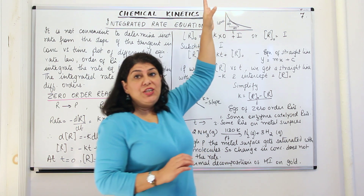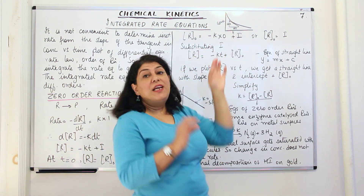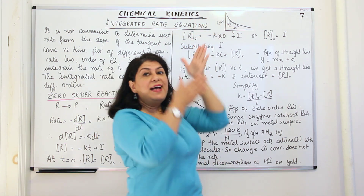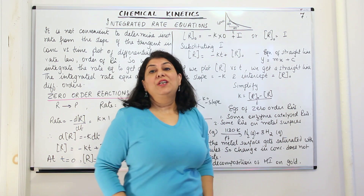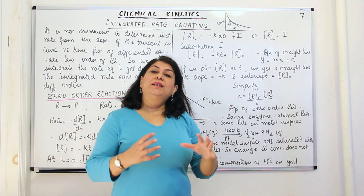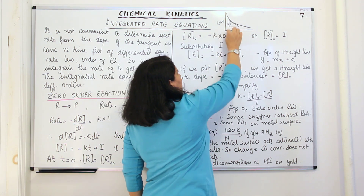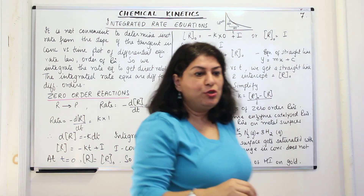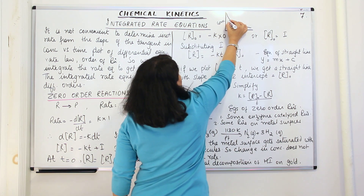For a reactant, the x-axis is time and the y-axis is concentration. Initially when time is zero, the concentration of the reactants is the highest, and as time passes and the reaction takes place, the concentration of the reactant keeps on decreasing. If we wanted to find out the average reaction rate, we would look at any time t1.